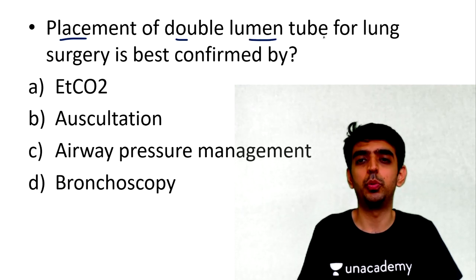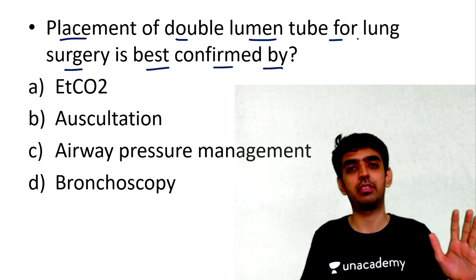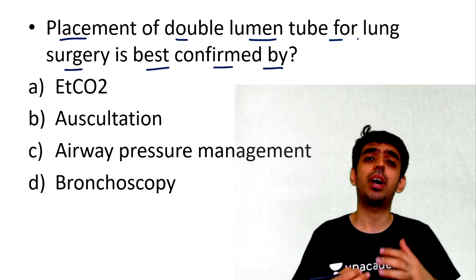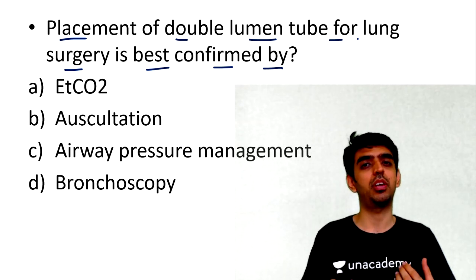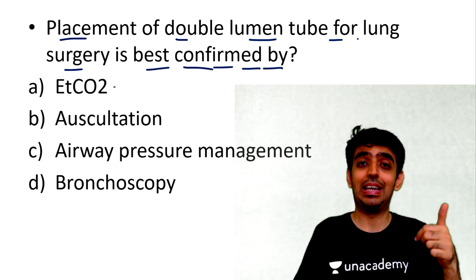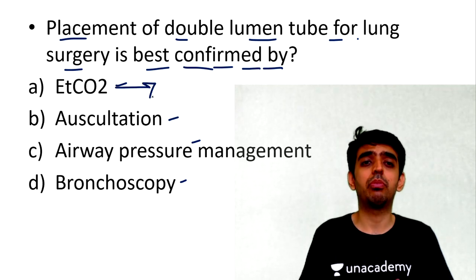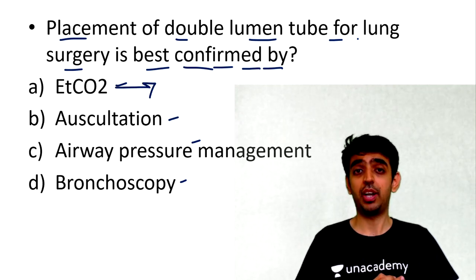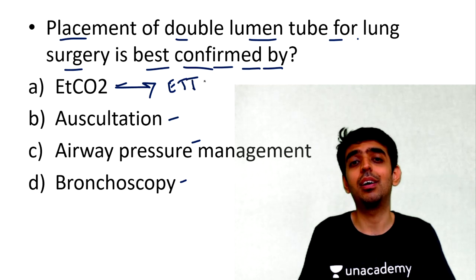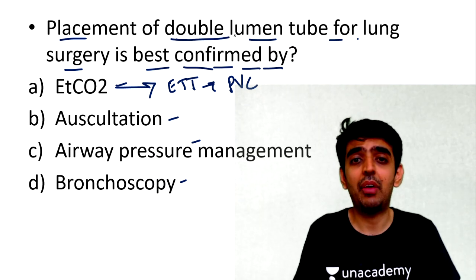Question 2: The placement of a double lumen tube for lung surgery is best confirmed by which of the following? Options are capnography, auscultation, airway pressure management, or bronchoscopy. This question was asked in previous examinations — the topic remains the same but the way of asking differs, so conceptual clarity in anesthesia is essential.